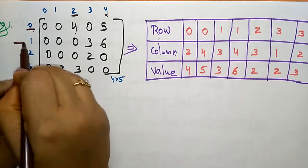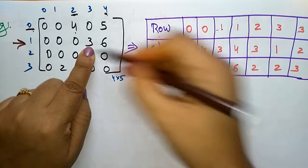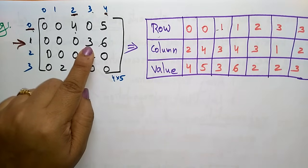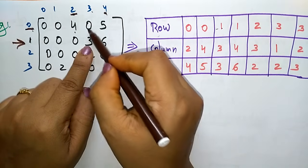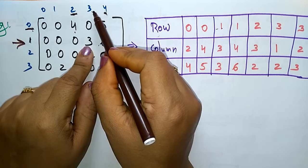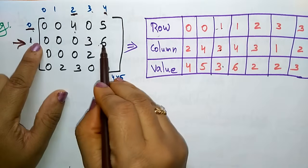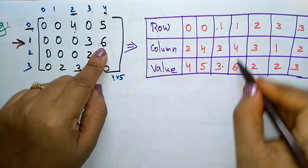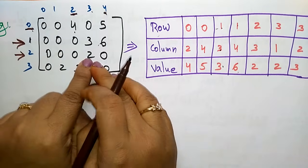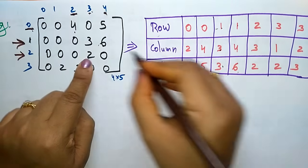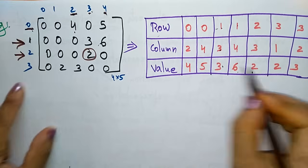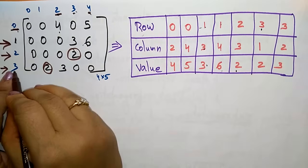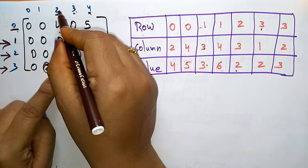Coming to the next row: in the first row, the index of column is three and the value is three — so one, three, three. One more non-zero element: row index one, column index four, value six — so one, four, six. Next, for row index two, the column index is three and the element is two — two, three, two. Then for row index three, column index one, value two — three, one, two. And row index three, column index two, value three — three, two, three.